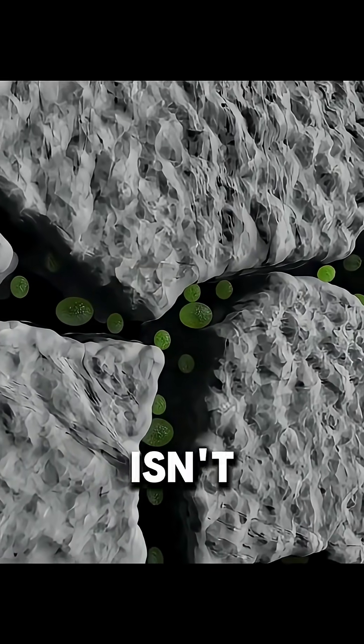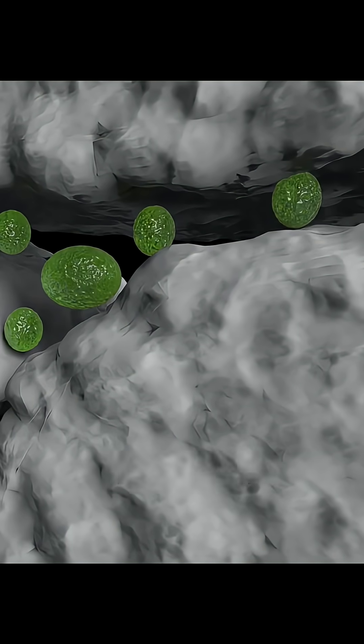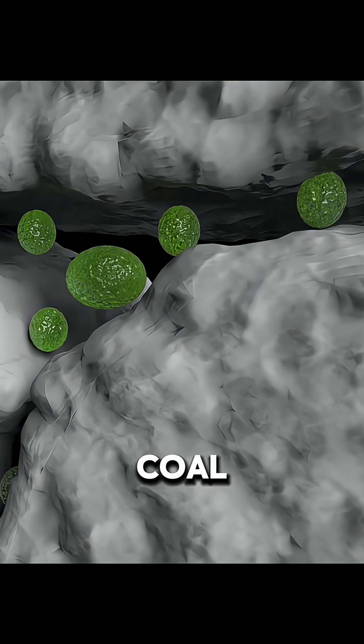However, the gas in coal seams isn't free-flowing. It's trapped, clinging tightly to the surface of the coal itself. On top of that, the seams are often filled with groundwater, which blocks the gas from escaping.